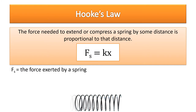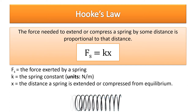You might have thought there's a 'd' in the formula, but there's not. Just like we changed 'd' to 'h' for height in gravitational potential energy, we change the variable here too. F_s is the force exerted on the spring; k is the spring constant with units of newtons per meter; and x is the distance the spring is extended or compressed from its equilibrium position — stretched like a slinky or compressed like a ballpoint pen spring.